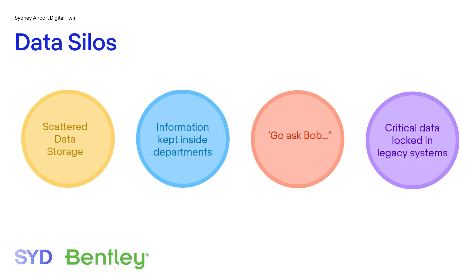Data is typically scattered across different types of file repositories, databases and business-specific IT systems. A common problem is that data is kept within departmental borders, with only exports and snapshots being shared with colleagues in other fields. Individuals can be bottlenecks for information sharing as well, where documents or reports require asking an individual for access, or data is simply locked in legacy systems, unavailable unless you have a specific client application and training.